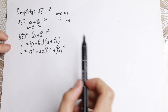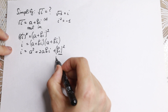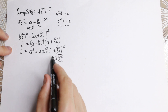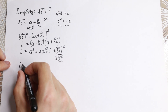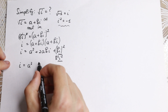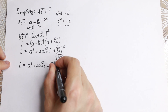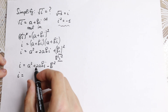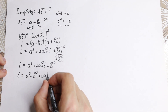Looking closely at this expansion, we have a b²i² term. Since i² = −1, that term becomes −b². So putting it all together, i = a² + 2abi − b². Rearranging, we get i = (a² − b²) + 2abi.